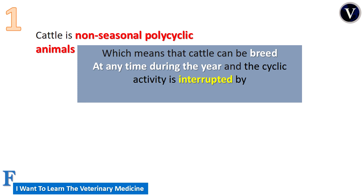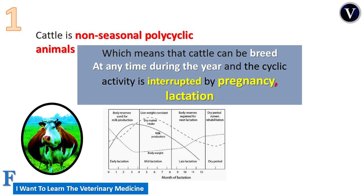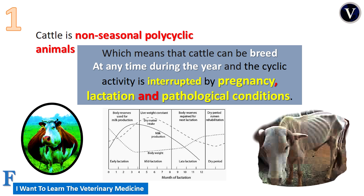But in cattle, the estrus cycle or the cyclic activity is only interrupted by three exceptions. First, when cattle is pregnant, it will not have an estrus cycle. Second, during high milk production, prolactin hormone is very high. Third, when cattle have a disease or a pathological condition, like what you see in the picture — the cattle is emaciated.